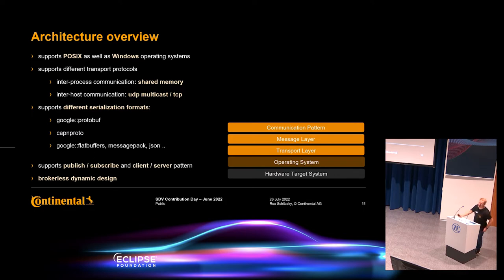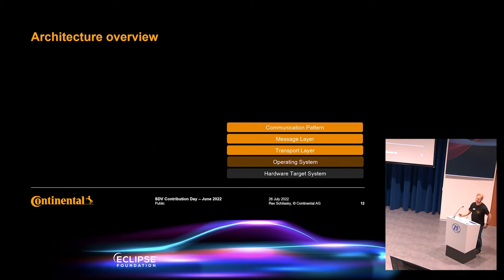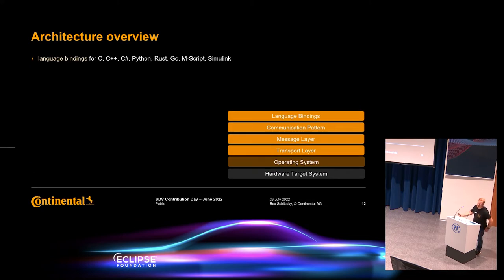Worth mentioning is that eCal is brokerless — there is no daemon application in the background, no connection maker or anything like this. All connection management and discovery is done by every single software component itself. eCal itself is developed in C++, but it has bindings to C, C#, Python, Rust, Go, and also a very nice Simulink toolbox where you can directly communicate with Simulink models out of the box.